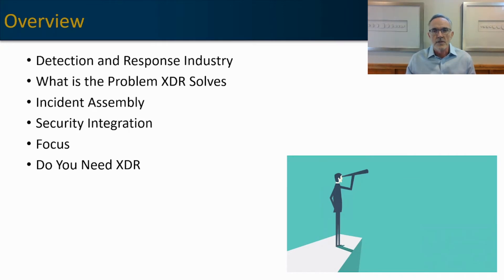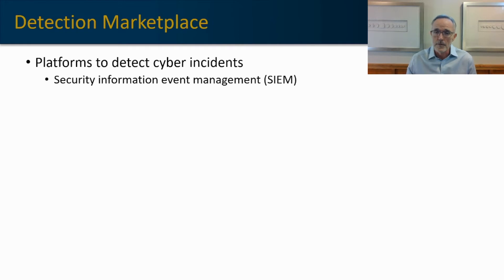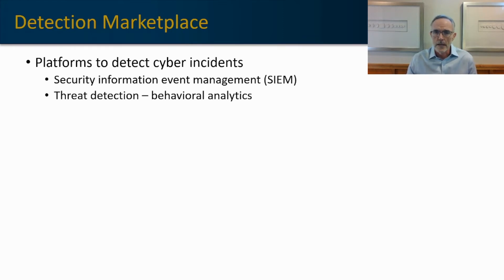Let's first discuss the detection marketplace. There are a number of detection platforms, some of which have been around for a long time. Specifically, there are the security information event management platforms — the SIEMs. They've been around for at least 10 years, probably longer than that. They're joined by their close relative, a threat detection platform. They use the same information to do their jobs, but they do it very differently. A SIEM is a signature-based platform, while a threat detection platform uses behavioral analytics.